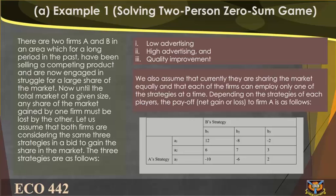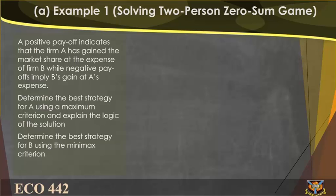We assume that currently they are sharing the market equally and that each firm can employ only one strategy at a time. Depending on the strategies of each player, the payoff (net gain or loss) to Firm A is as follows. A positive payoff indicates that Firm A has gained market share at the expense of B; negative payoffs imply B's gain at A's expense. Determine the best strategy for A using the maximin criterion and for B using the minimax criterion.